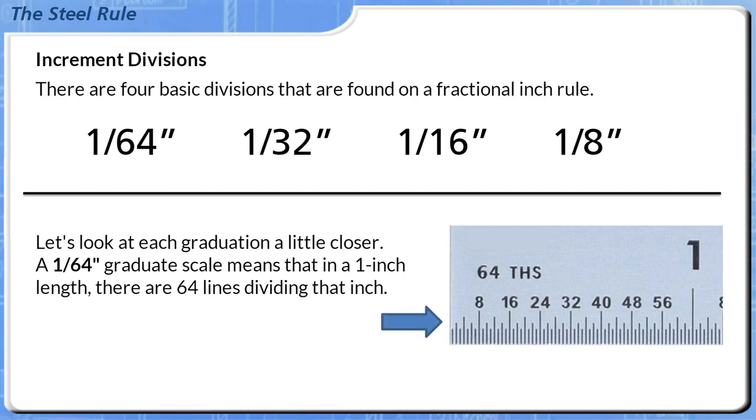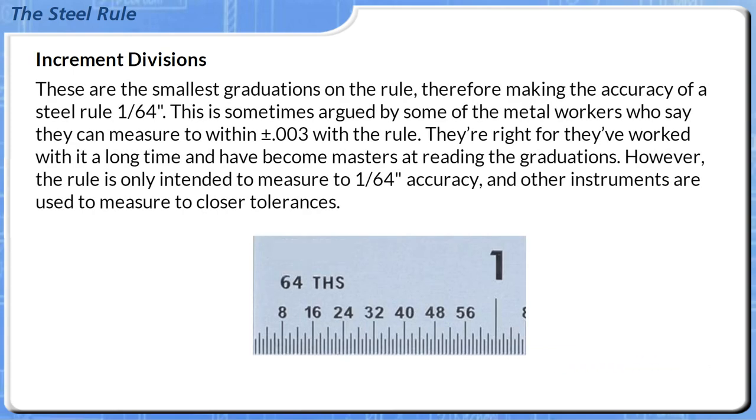A 1/64th inch graduated scale means that in a 1 inch length, there are 64 lines dividing that inch. These are the smallest graduations on the rule, therefore making the accuracy of a steel rule 1/64th inch. This is sometimes argued by some of the metal workers who say they can measure to within plus or minus 3/1000ths with the rule. They're right, for they've worked with it a long time and have become masters at reading the graduations. However, the rule is only intended to measure to 1/64th inch accuracy, and other instruments are used to measure to closer tolerances.